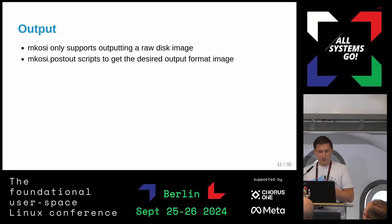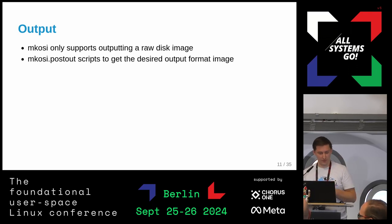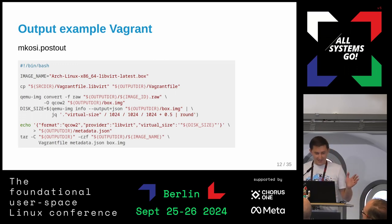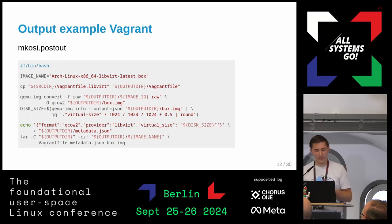Then we have the output. MakeOSI supports multiple output formats, but for disk images it only produces a raw disk image. We want a QCOW image, and for Vagrant we need something else. For that there's the `mkosi.postoutput` script where you can write a bash script — for example, it converts the raw image into QCOW, writes some metadata, then tars it up, which is basically what they call a Vagrant box. You're still left with some bash, but it's okay.